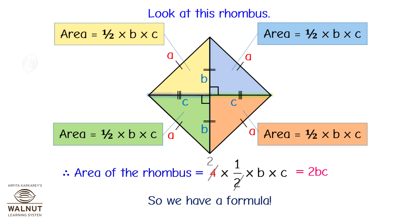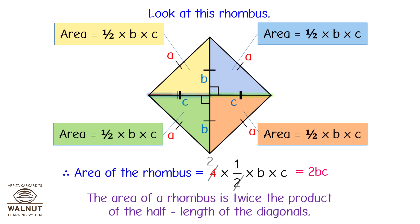So we have a formula: the area of a rhombus is twice the product of the half-lengths of the diagonals.